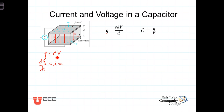C, the capacitance, is a constant. It comes outside of our derivative, and we then have C times dV/dt. This is one of the two formulas that define the current and voltage relationship in a capacitor.